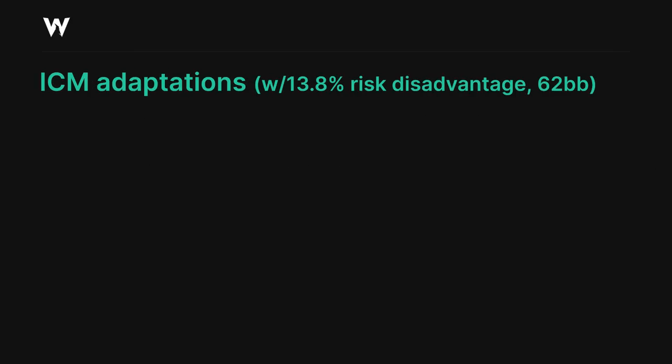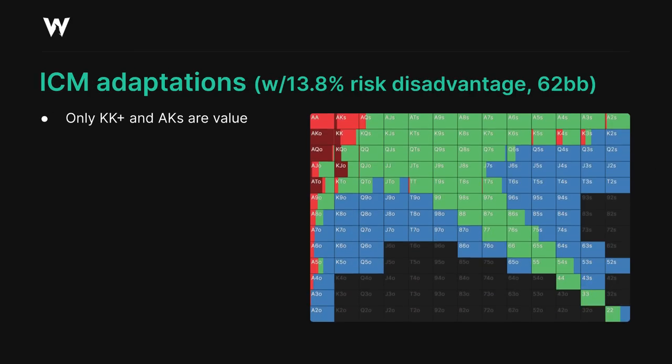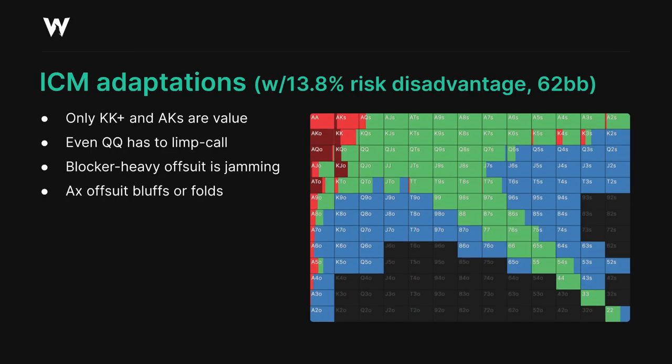With a risk disadvantage, some very interesting things happen. Remember that as the small blind in this spot we were essentially employing a pure limp strategy at the unopened node, and our high risk premium with the 62 big blind stack against the chip leader is exerting a big influence here. We're actually limp jamming some hands, although it's a very blocker-heavy range of mostly ace-10 offsuit through ace-king offsuit, and we're still 3-bet bluffing with mostly those offsuit ace combos. But the biggest difference is our limp 3-bet value range — it's only kings plus and ace-king suited.